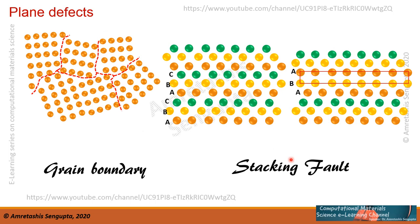Finally, there is the stacking fault. Say you have a close-packed structure built up with an A, B, C, A, B, C stacking sequence — showing just the vertical direction as a side view. This A, B, C, A, B, C stacking is going on, and suddenly one of the planes might be missing. For example, there is no C, but just B followed by A again. This kind of defect is known as a stacking fault, and it is another type of plane defect.